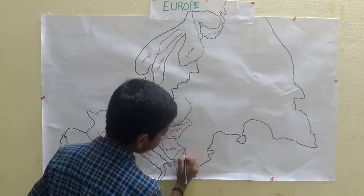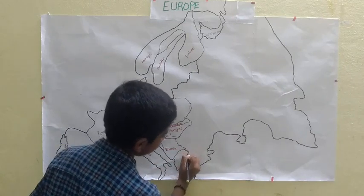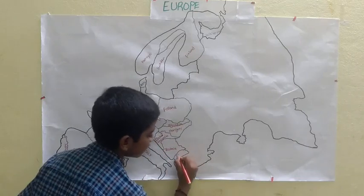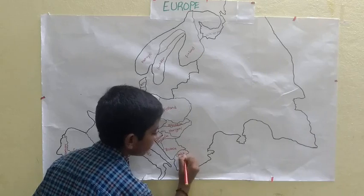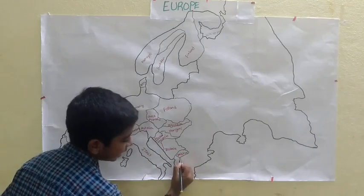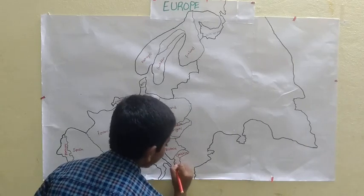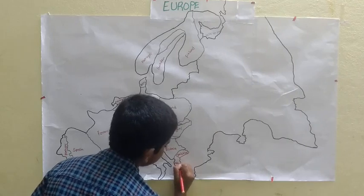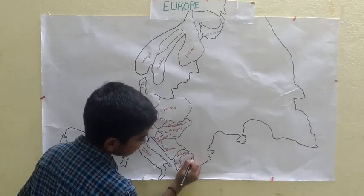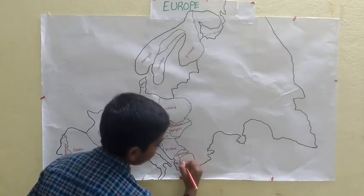After that we see four small countries: Kosovo (Pristina), Albania, and Macedonia.